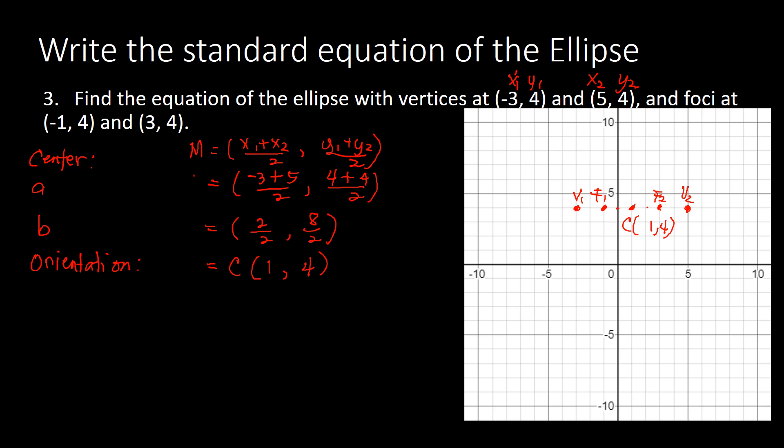Now that we have the center at (1, 4), we find 'a', which is the distance from the center to a vertex. Counting from the center to vertex two at (5, 4): that is 1, 2, 3, 4 — so a = 4.